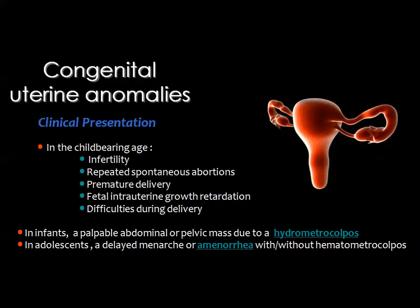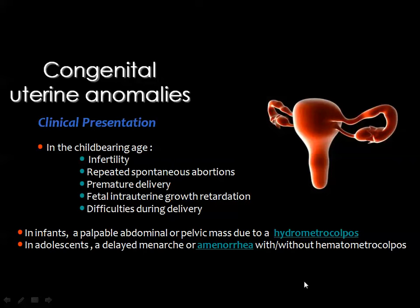The anomalies present clinically according to the age of the patient. In the childbearing age, the patient may present with infertility, spontaneous abortion, premature delivery, fetal intrauterine growth retardation, or difficulties during delivery. In infants they may present with hydrometrocolpos, while in adolescence after the start of menses they may present with amenorrhea or hematometrocolpos — distension of the vagina and uterus by blood.